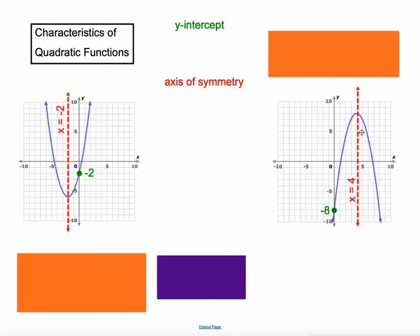And this one over here is at x equals 4. Notice on the one on the left, it's where the graph stops getting smaller and starts getting bigger. On the one on the right, it's where the parabola stops getting bigger and starts getting smaller. That's where the axis of symmetry occurs.